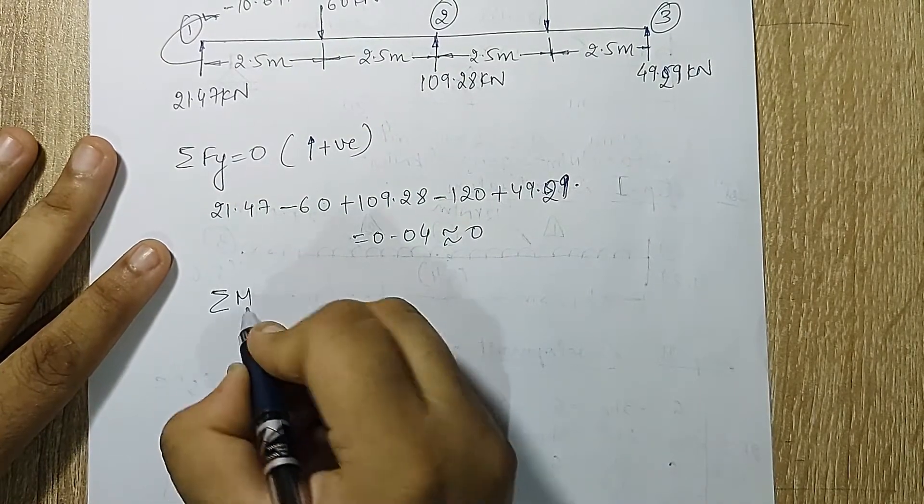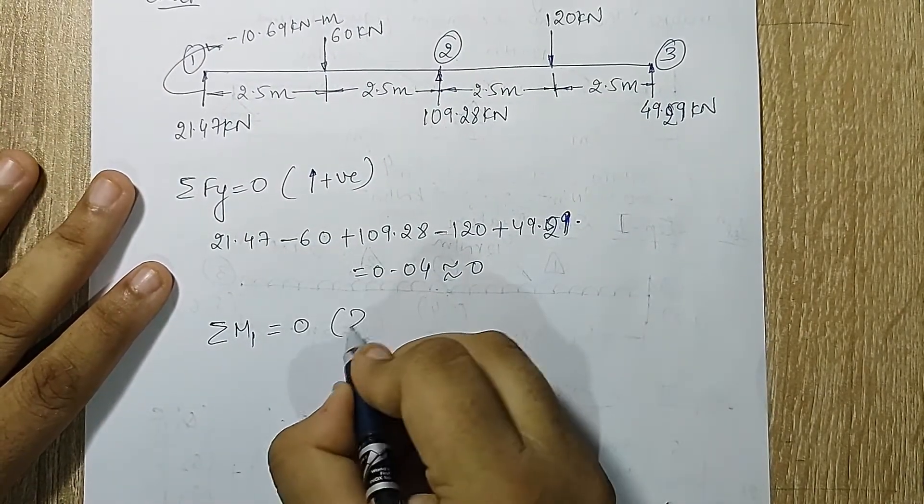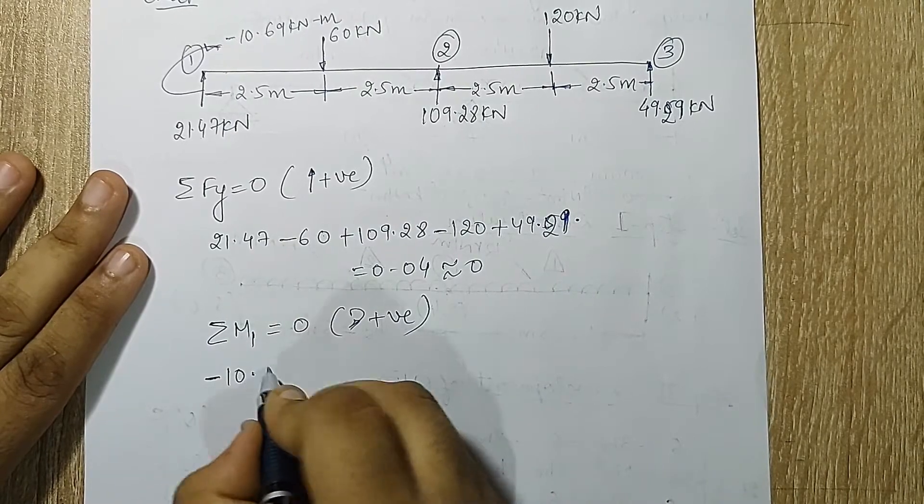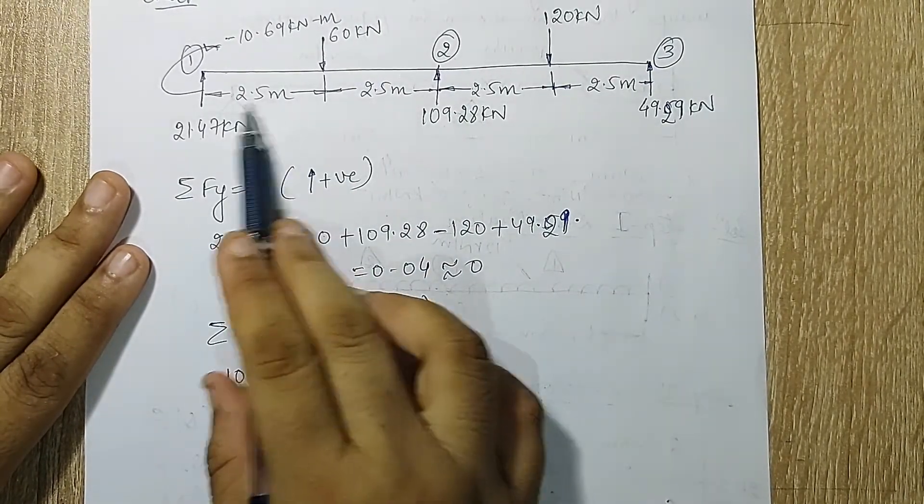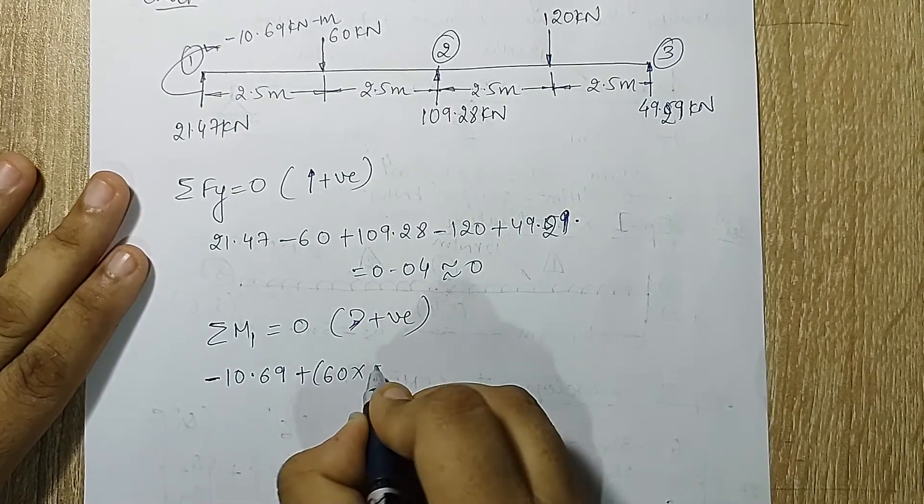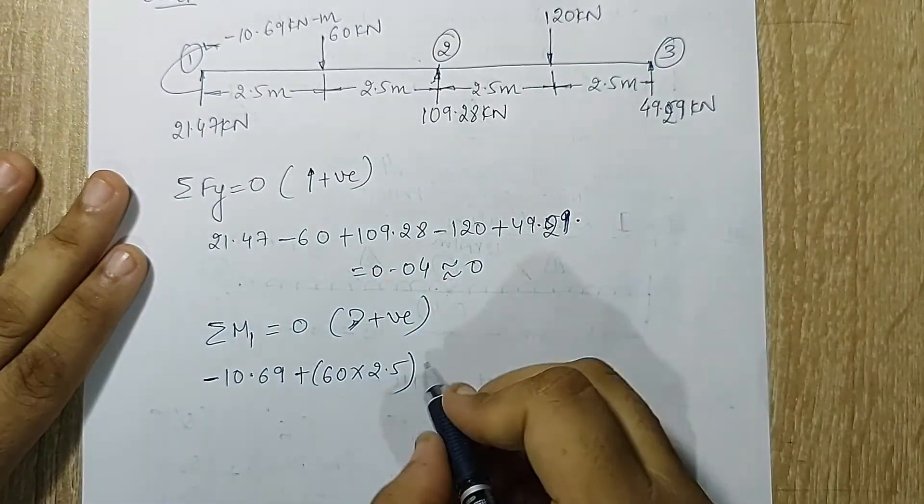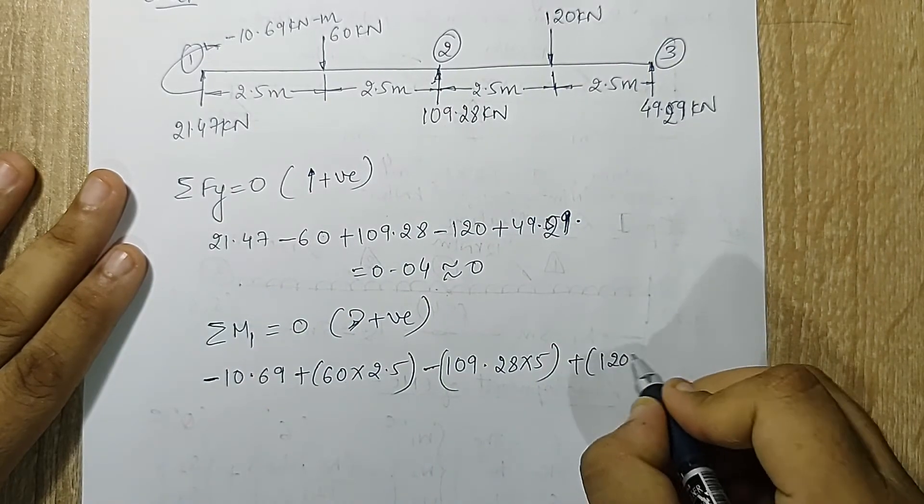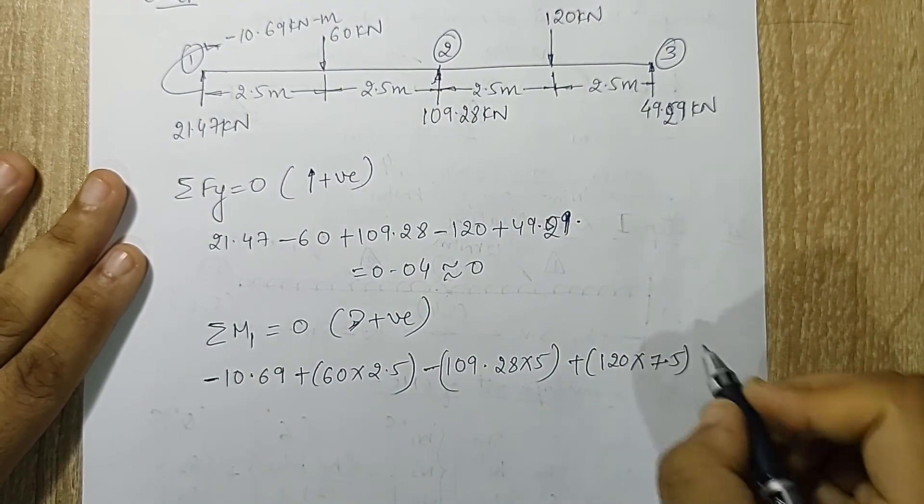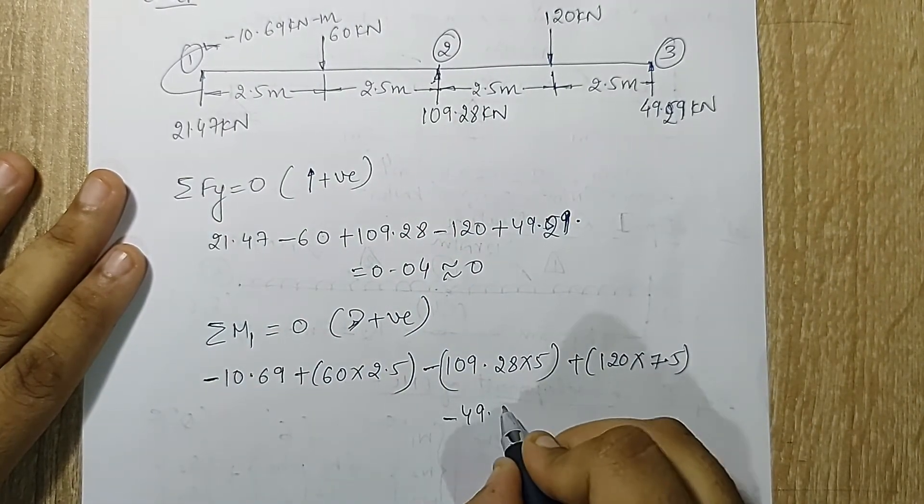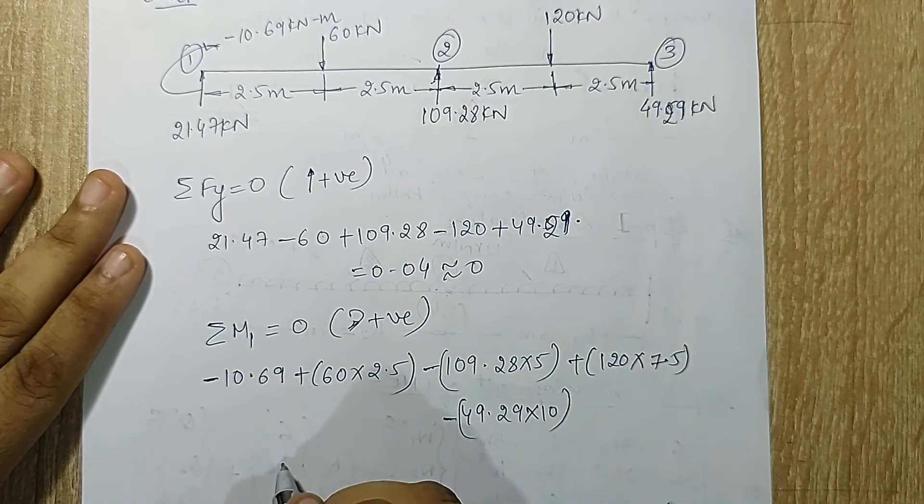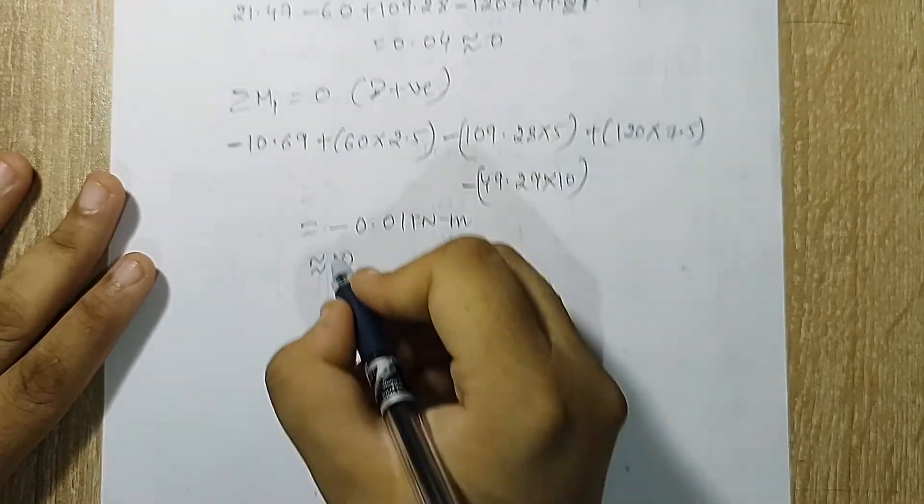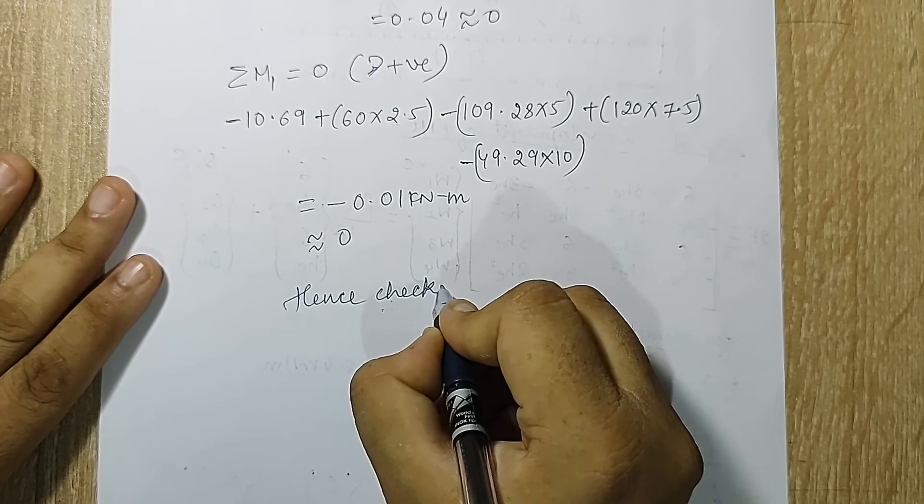Next I'll go for summation of moment about node 1 is equal to 0. Clockwise will be considered positive. This is minus 10.69 as it is. 60 will turn clockwise, distance is 2.5 so plus 60×2.5. This turns anti-clockwise so minus 109.28×5. This turns clockwise so plus 120×7.5 and lastly this turns anti-clockwise ×10. When I solve this I get minus 0.01 kNm which is approximately equal to 0 which means my answers are correct, hence I have checked my solution.